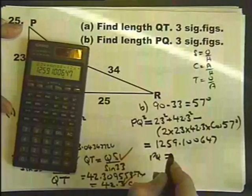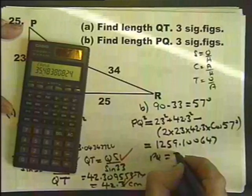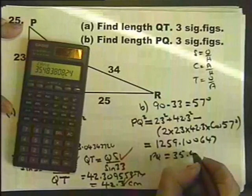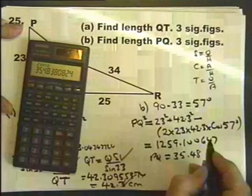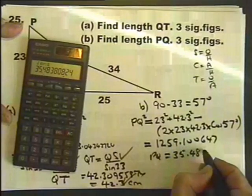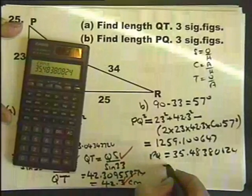Now remember that that's PQ squared. So PQ itself is the square root of that. Now if you use that value rather than the whole calculator value, once you put it to three significant figures, I don't think you'll find there's any difference at all.